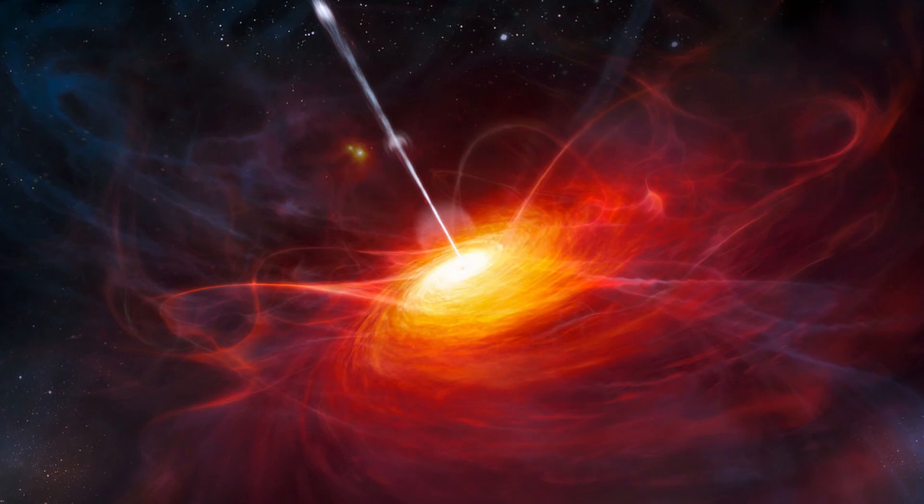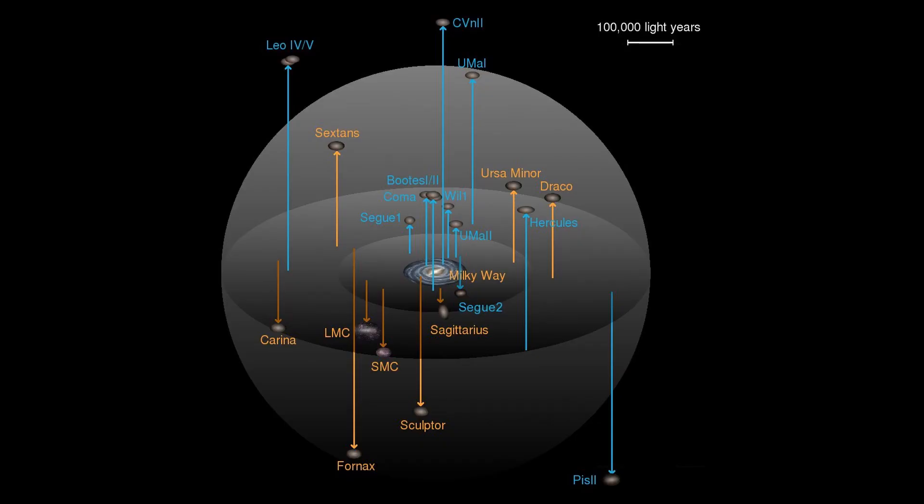This process of quasar ejection and alignment also neatly ties in with the observation that dwarf galaxies become aligned as they are simply quasars which have been ejected from a galaxy which over time calm down to become a more normal companion. These would therefore have similar orientation and spin due to this effect.